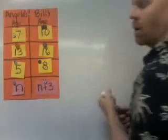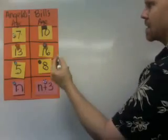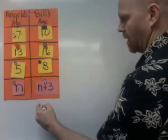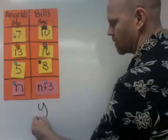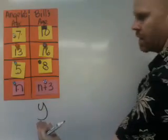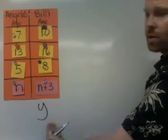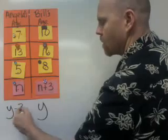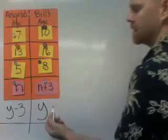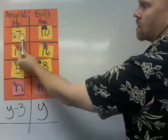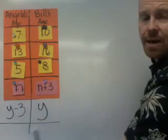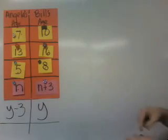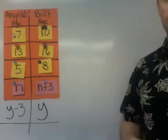Similarly, going the other way: let's say Bill is y years old. If Bill is y years old, then Angela will be y minus three years old, because Angela is always three years less than Bill. And that's one way to see how to write expressions using addition and subtraction.